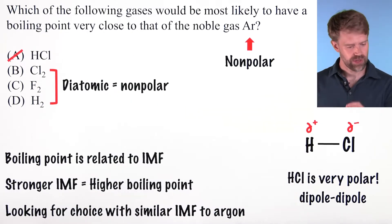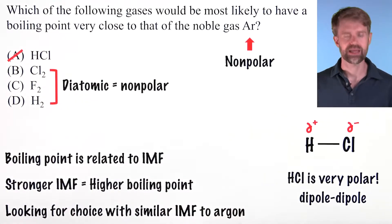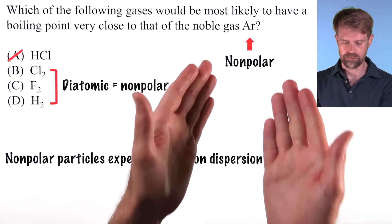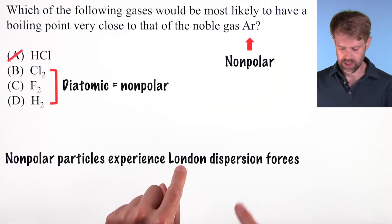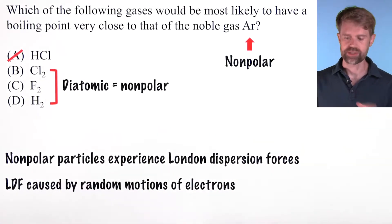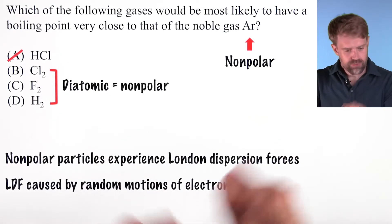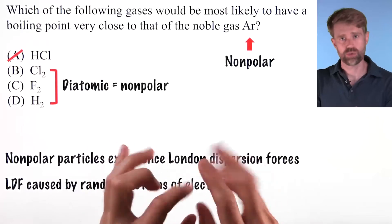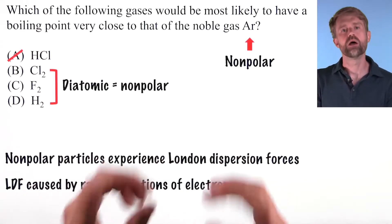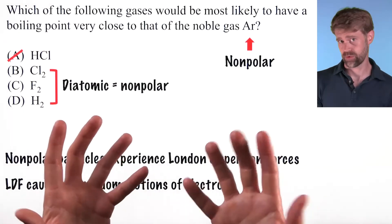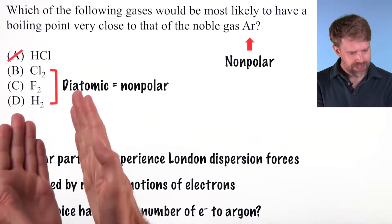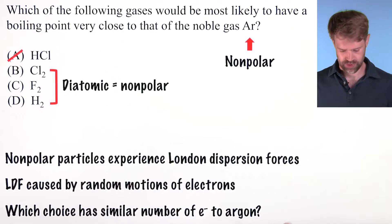Now we have to figure out which of the remaining three diatomic elements has similar IMF to argon. Non-polar particles experience London dispersion forces, or LDFs. These are caused by the random motion of electrons — at any given instant, the random movement of electrons creates temporary dipoles, little zones of partial positive and partial negative charge, creating little flickers of attraction. London dispersion forces are the weakest of intermolecular forces, but they're still very important for the AP Chem exam.